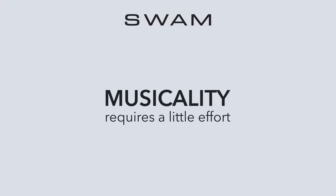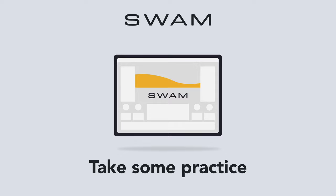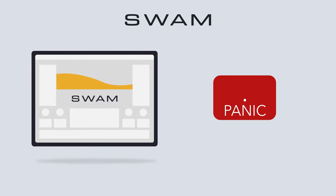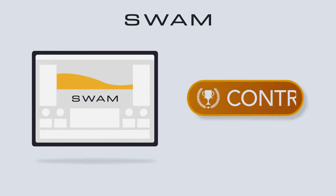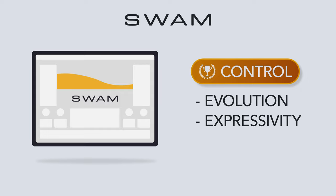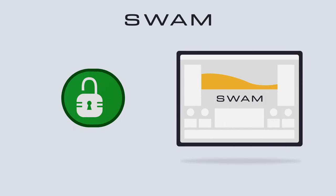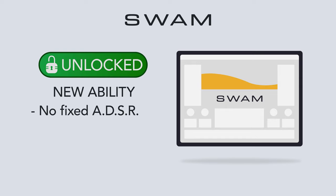Musicality doesn't come free. While triggering a sample is easy, the payoff is small. Learning to be expressive on a truly performable instrument like a SWAM instrument does take some practice. SWAM instruments don't require the years of study acoustic instruments demand, but you'll have to learn how to control the sound evolution and expressivity of your SWAM instrument in real time or in post-production. The payoff of this learning curve is the ability to play any musical phrase without the constraints of a fixed ADSR or canned articulation.